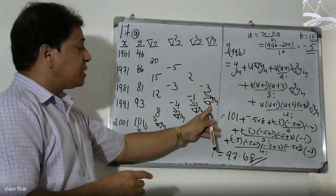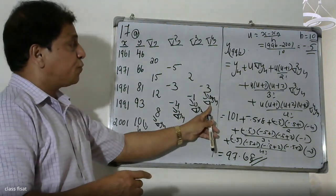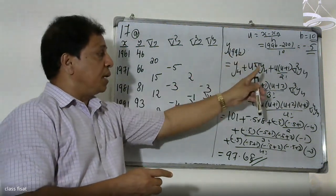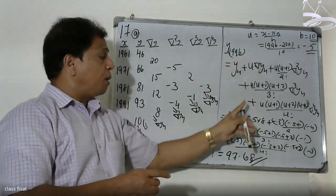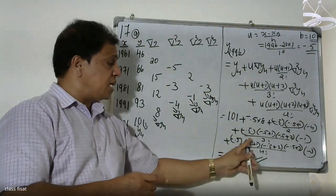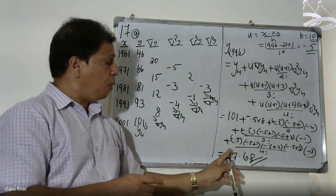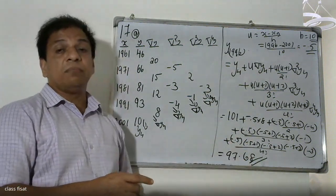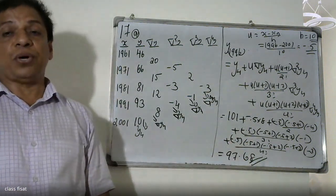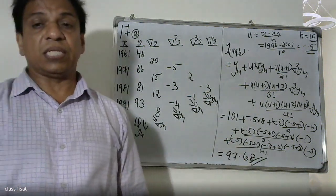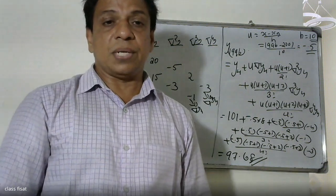The differences include values like -3, 10, +4, and -8. Substitute these into the formula and calculate to get 97.68. That is the final answer.